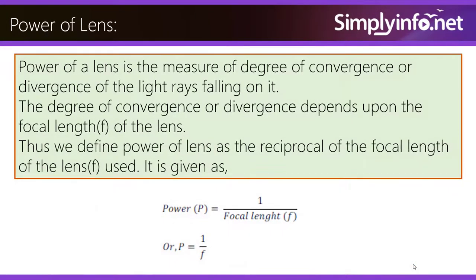Power of lens: Power of lens is the measure of degree of convergence or divergence of the light rays falling on it. The degree of convergence or divergence depends upon the focal length of the lens. Thus we define power of lens as the reciprocal of the focal length F. It is given as power P is equal to 1 by F.